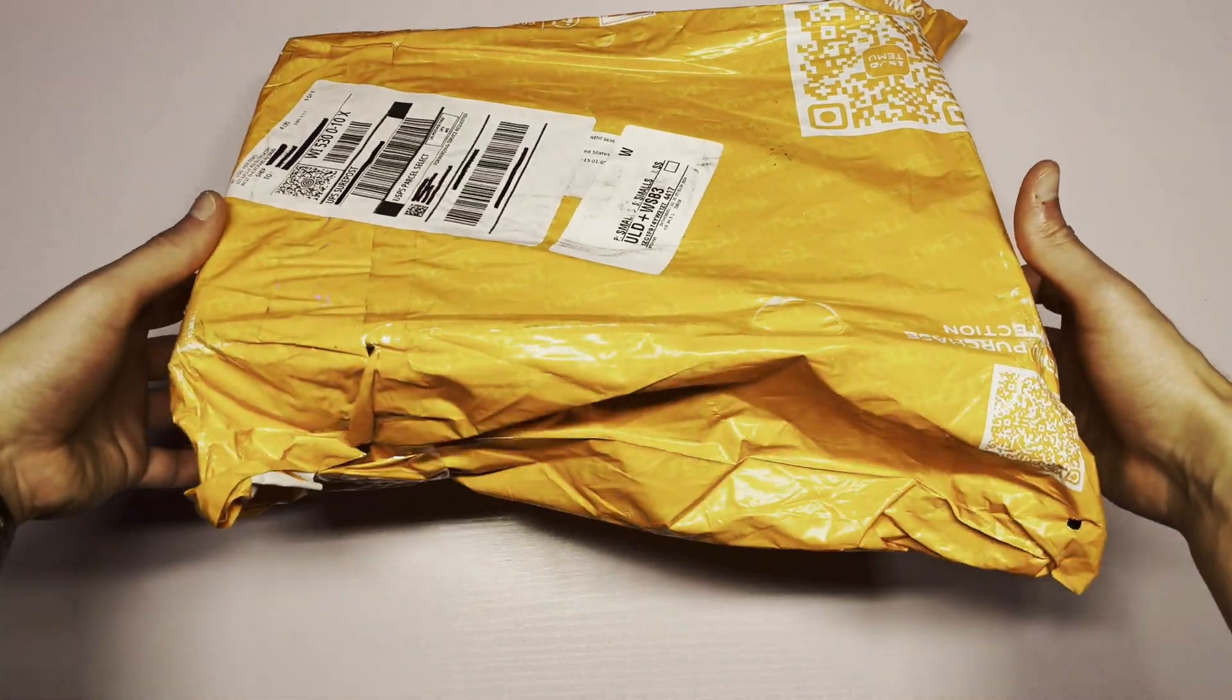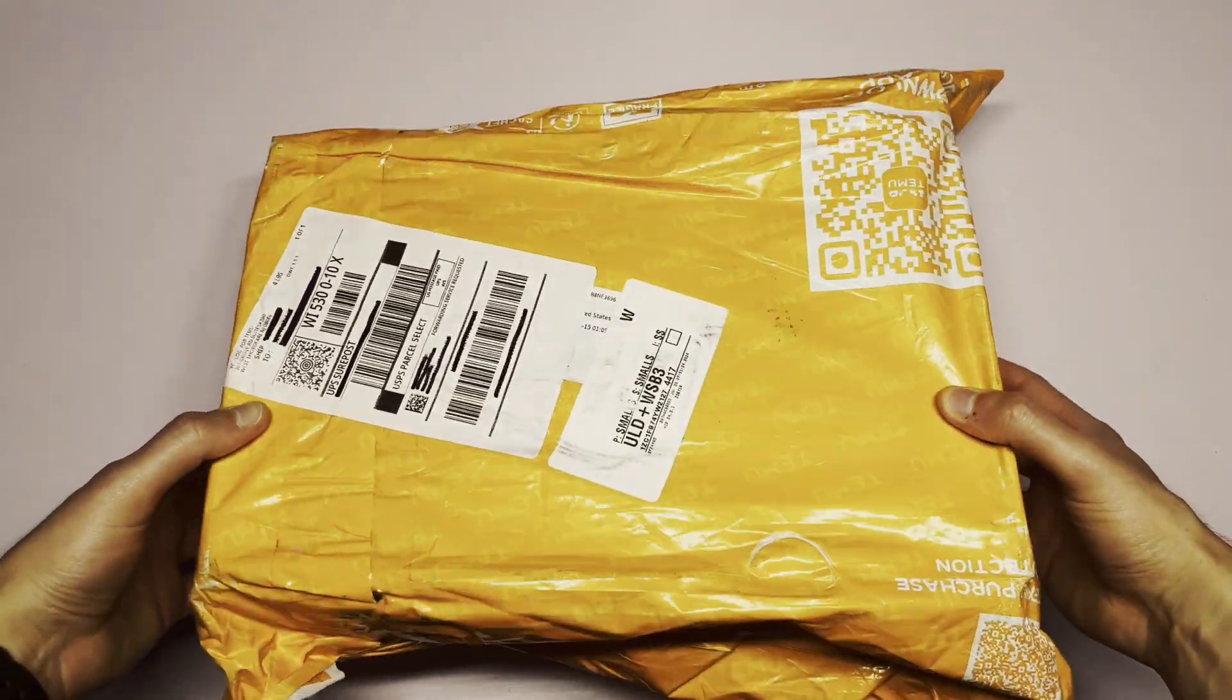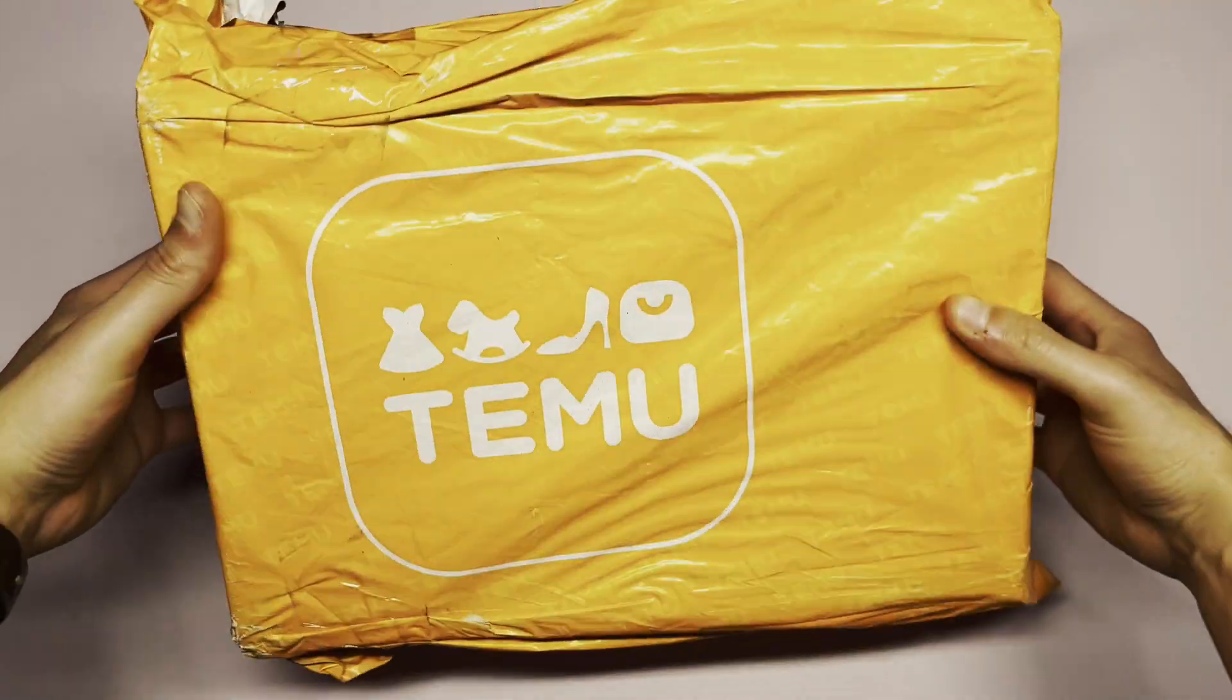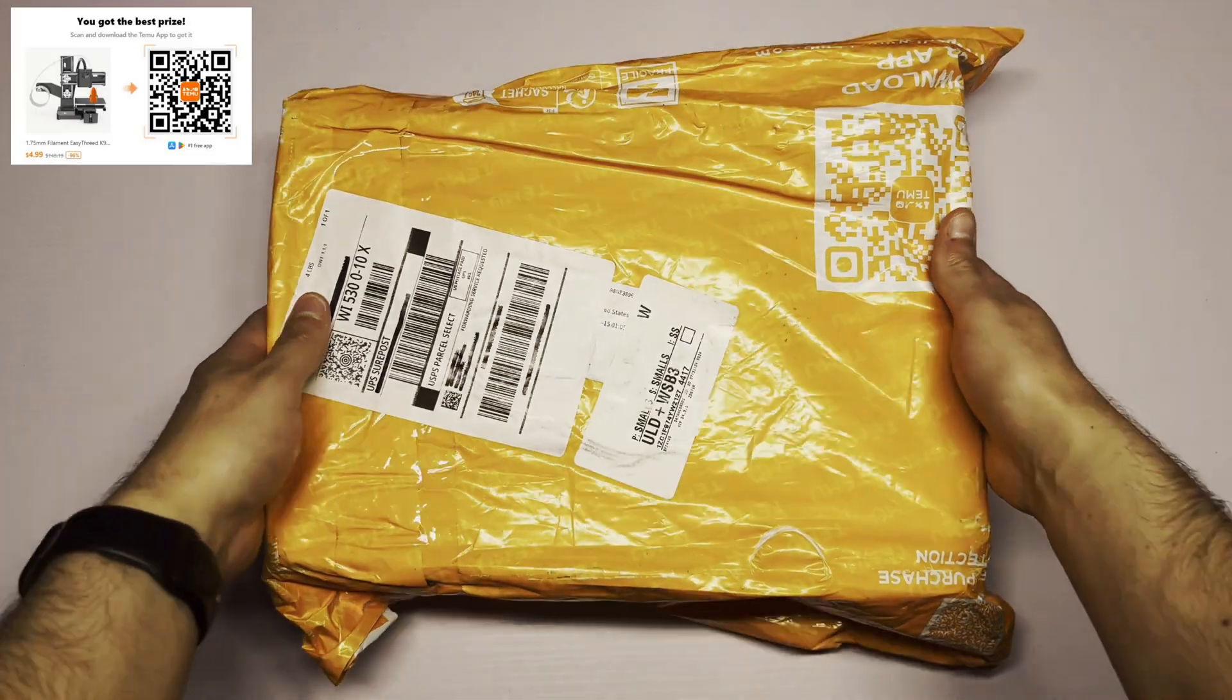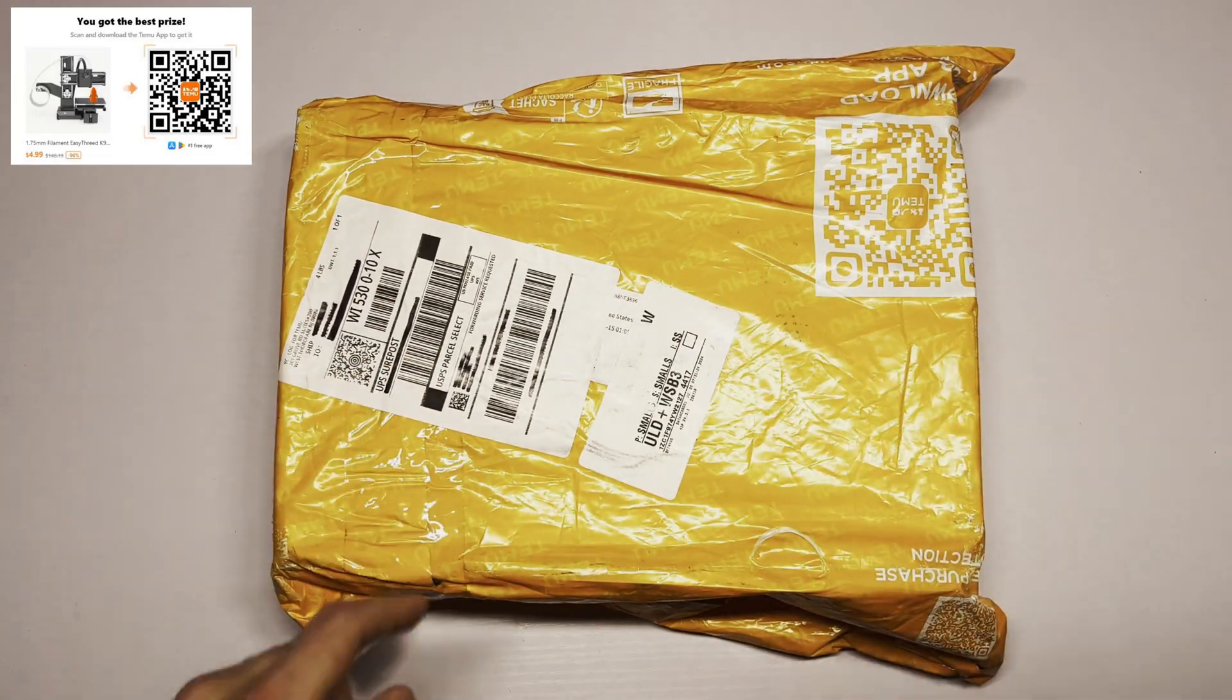First off, let's talk about packaging. Here's the package of the 3D printer I ordered from Temu. It looks like it was packaged by a child. That's because it honestly probably was packaged by a child. Well, let's break this thing open and see what's inside.